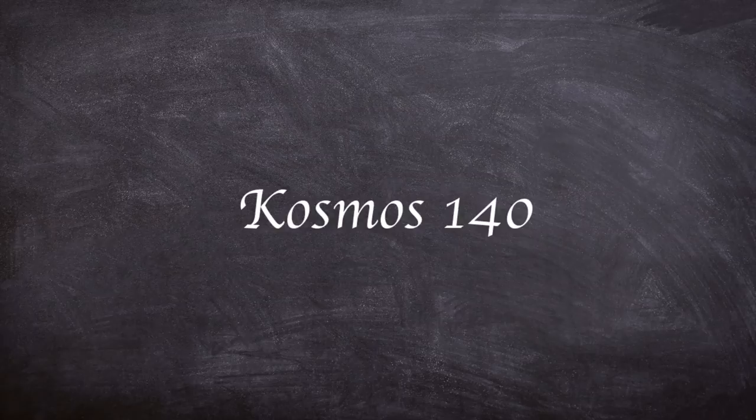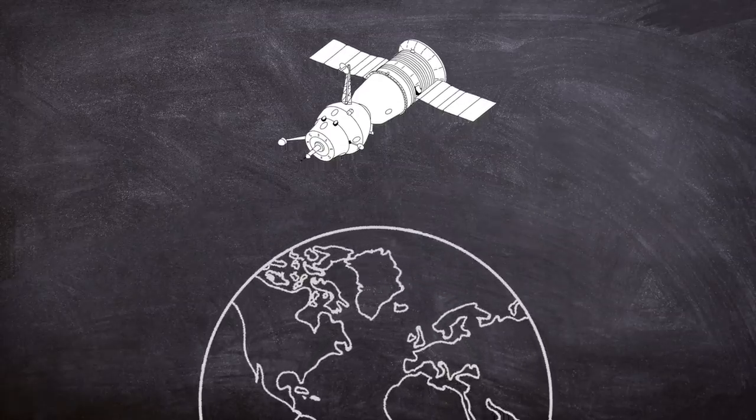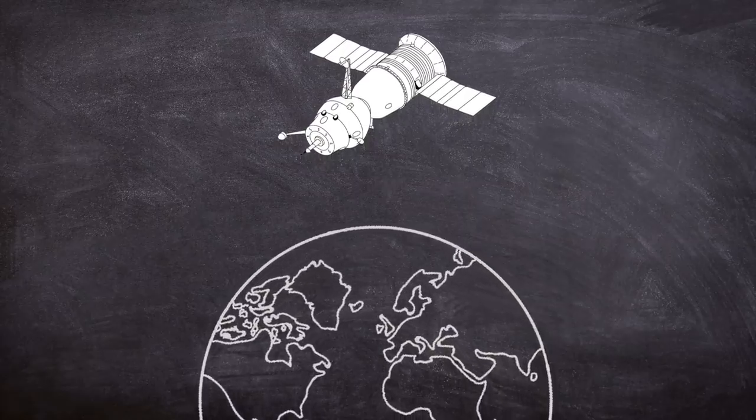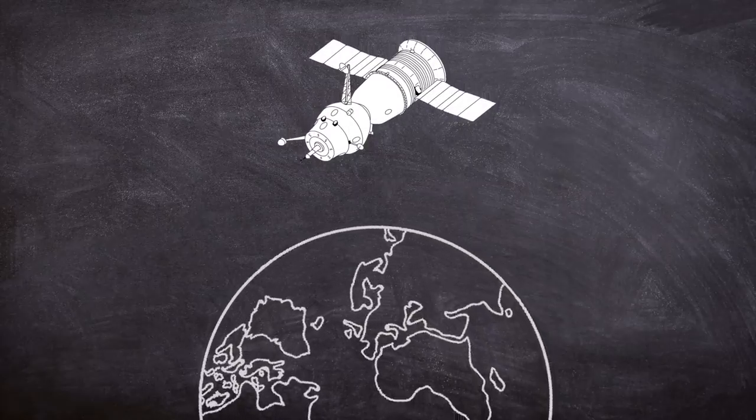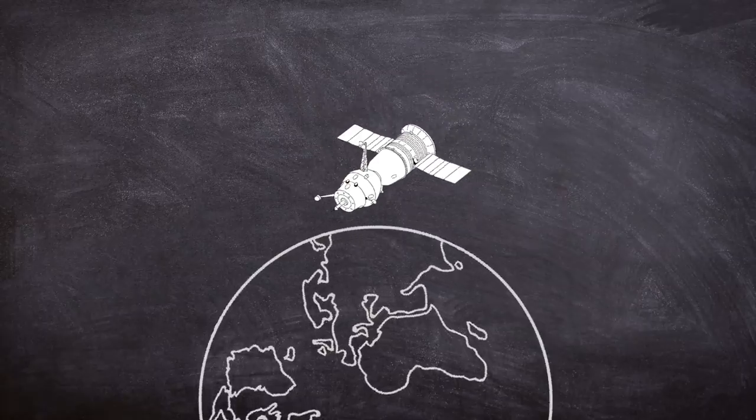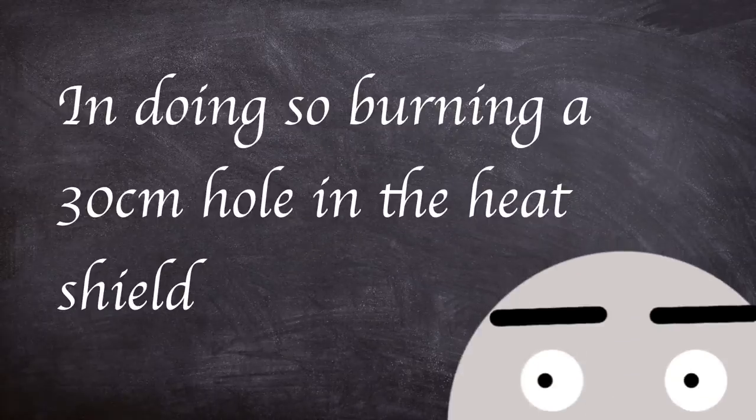The third test launch, Cosmos 140, did actually take off and enter orbit as intended. The mission started on February 7, 1967. Upon re-entry, once again the craft experienced guidance issues. This time, however, it remained controllable until re-entry when another malfunction caused too steep a descent angle, burning a 30-centimeter hole in the heat shield.